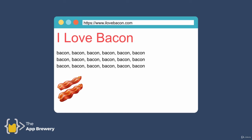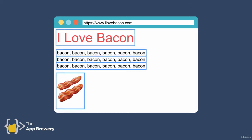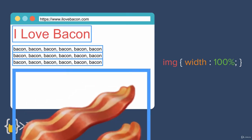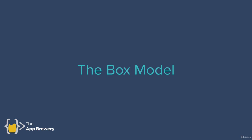Every single HTML element on screen is treated as a box by CSS. By styling that box — changing its height, width, margin, and padding — that's how we determine how elements are laid out and show up on screen. For example, if we specify a CSS rule targeting all images on a website to have a width of 100%, that changes the width of that box to 100% and scales the image to fill the entire screen width. This concept in CSS is known as the box model.